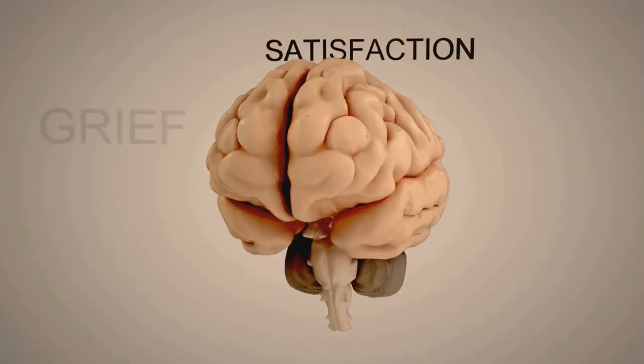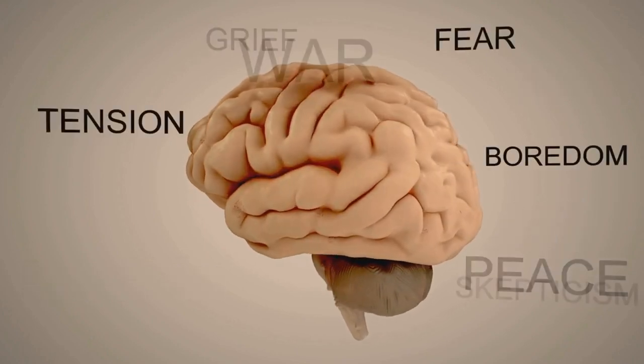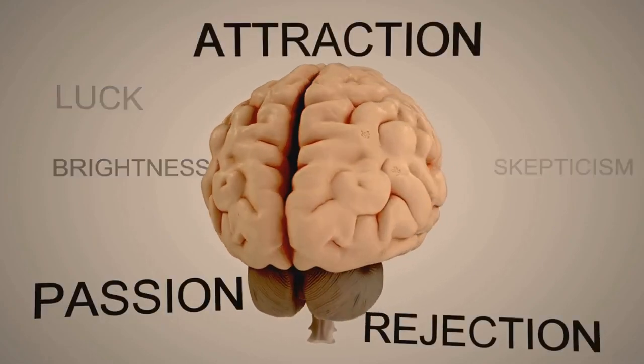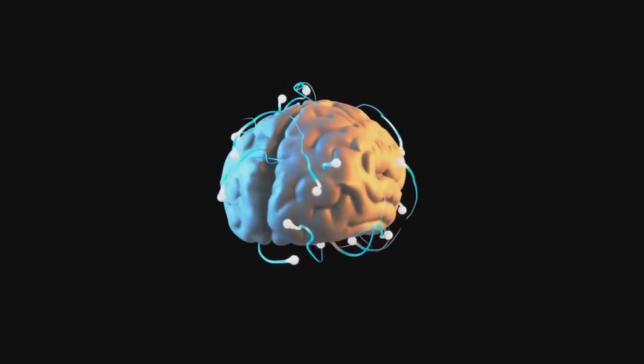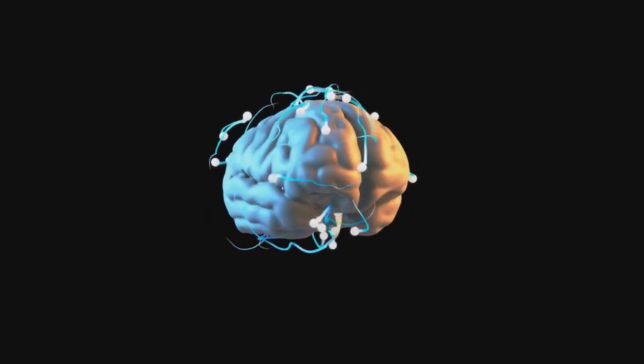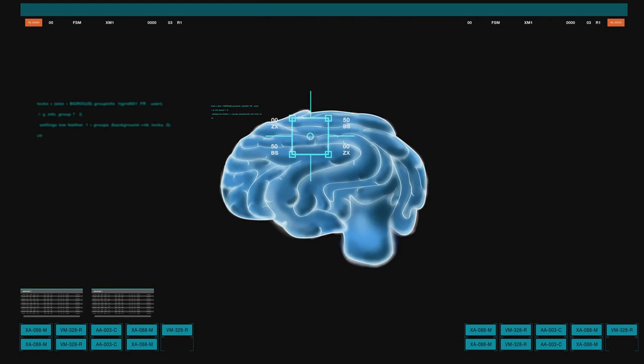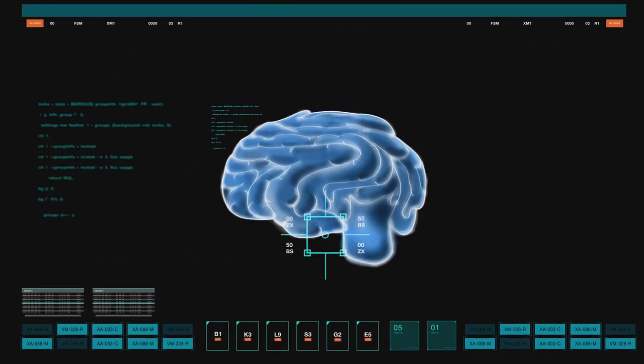In all these scenarios, we see how confirmation bias can lead to misinterpretation of data, thus skewing scientific predictions. It's a reminder of the importance of objectivity in science, of the need to separate our personal beliefs from the data, and to let the data speak for itself. So while scientific prediction and confirmation bias may seem worlds apart, they can and do intersect, often with significant consequences.